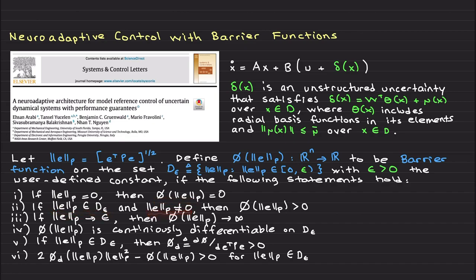If you are on this set and this is not zero, then phi is positive. When you approach the epsilon limit, phi barrier function approaches infinity. Barrier function is continuously differentiable. If you are on this set, basically the derivative of phi, which is d phi over d e transpose p e, is positive. And we have this additional condition that is required, that we use in the proof as well. Basically, 2 phi d p to the power of 2 minus this needs to be positive for e on this d epsilon set.